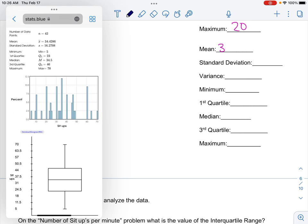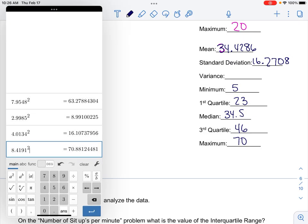We've got 34.4286, standard deviation of 16.2708. Variance, we don't know yet. Minimum 5, q1 23, median 34.5, q3 46, max 70. Find the variance. Square it. You've got your variance here.